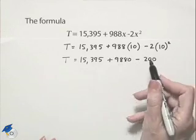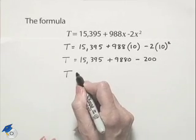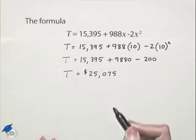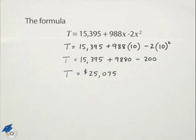And we can evaluate that to give us T equals 25,075, which is interpreted as the average cost of tuition for the school year ending in 2010.